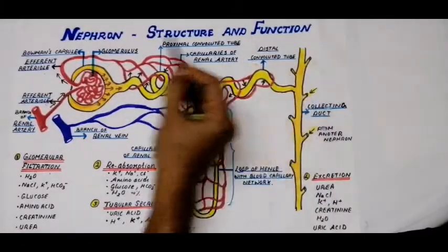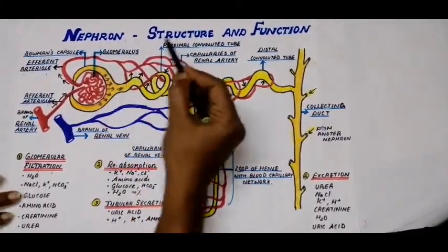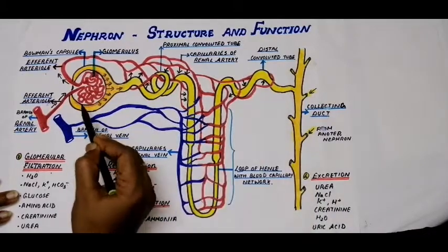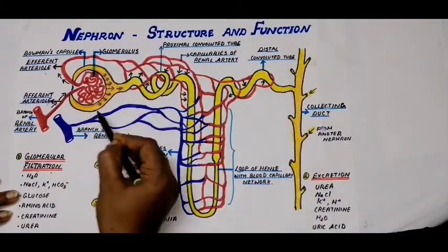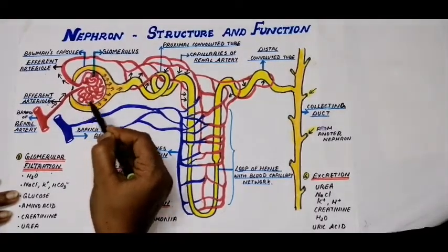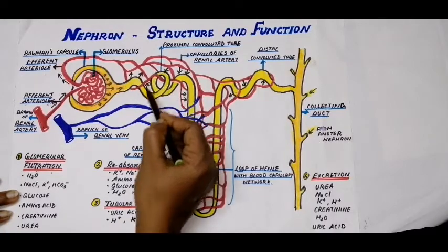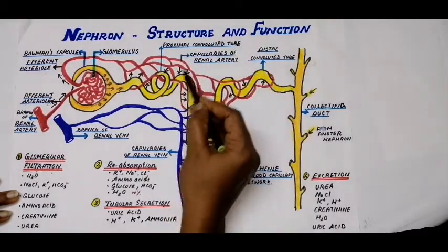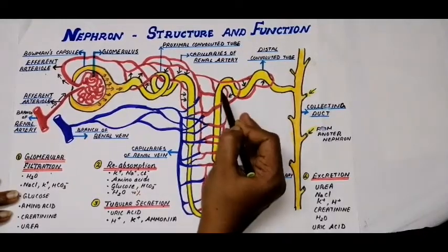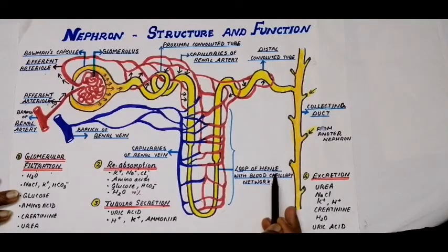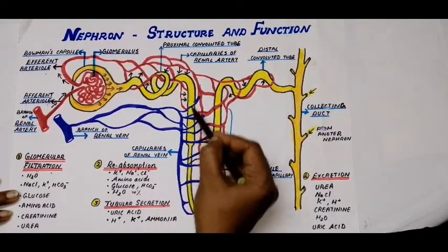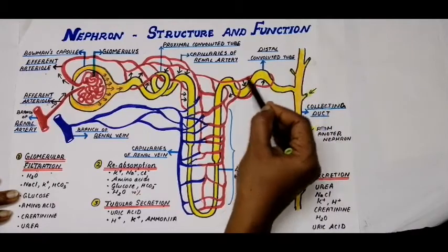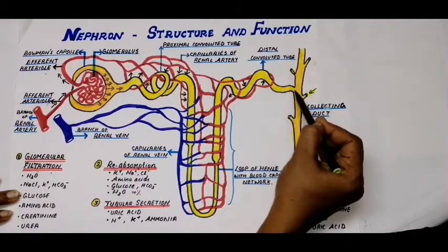Looking at the structure of the nephron: the upper end or head of the nephron consists of a cup-shaped Bowman's capsule, which leads into a convoluted and folded tubular structure called the proximal convoluted tube. Following this is a U-shaped bend called the loop of Henle, which has a descending and ascending limb. After the loop of Henle there is another convoluted tube, the distal convoluted tube, which ends in the collecting duct.